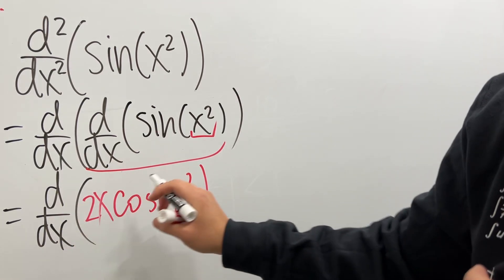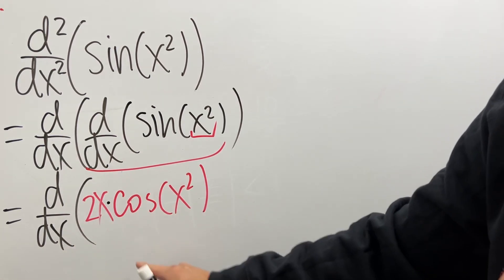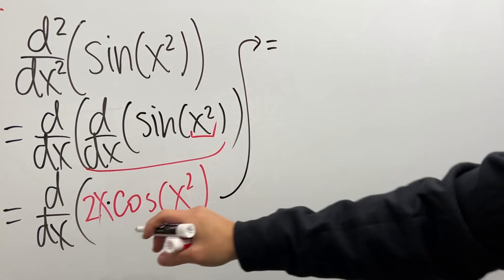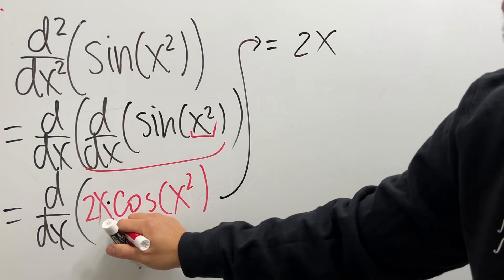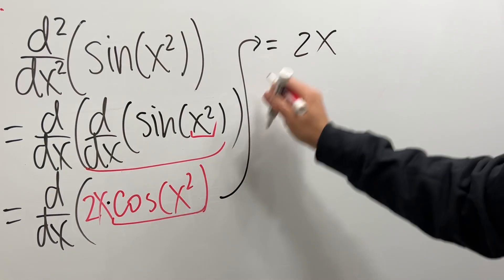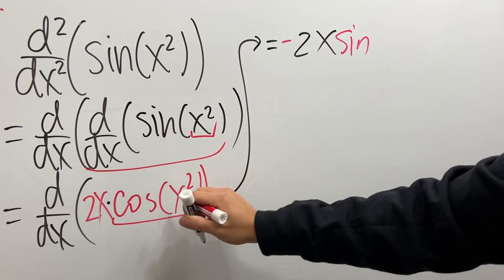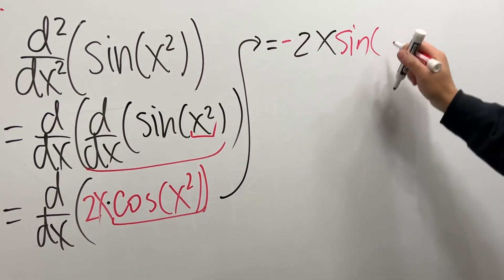Now, derivative of this, product rule. So, I'm going to keep the first function, which is going to be 2x. And then, multiply by the derivative of the second. Derivative of the second is negative sine, and then we have the x squared.